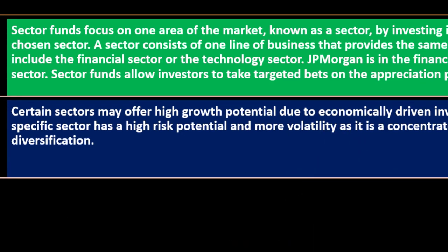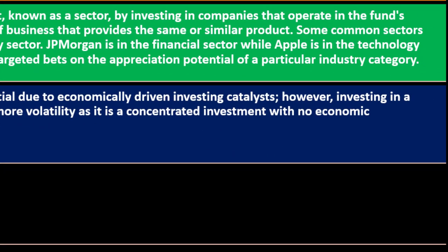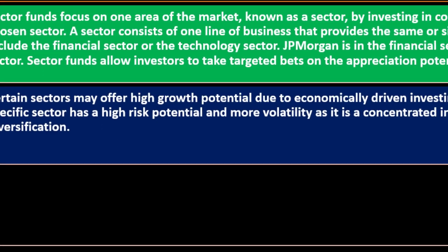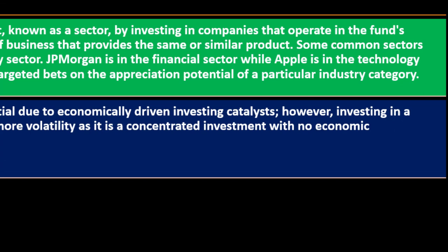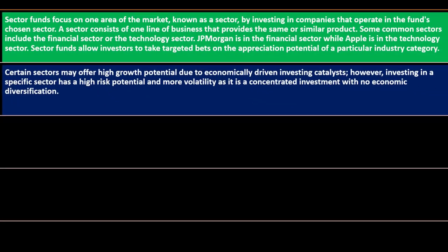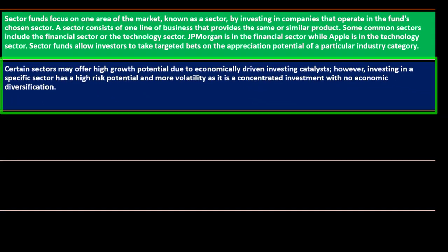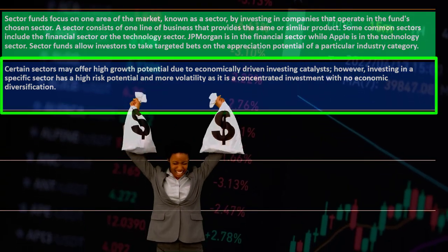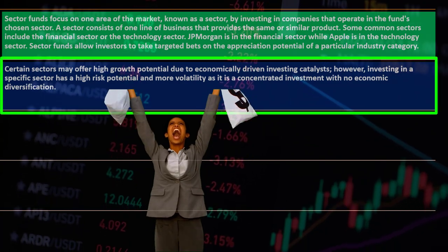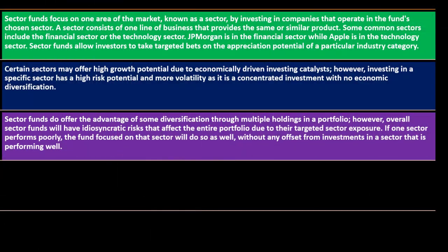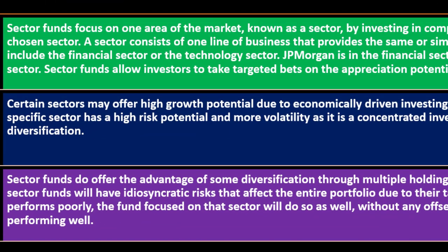Certain sectors may offer higher growth potential due to economically driven investing catalysts. However, investing in a specific sector has high risk potential and more volatility as it is a concentrated investment with no economic diversification. You have diversification within a sector, but if economic conditions are bad for the entire sector, although your money isn't in one stock, it's spread across stocks impacted by the same forces — resulting in more volatility than a broadly invested portfolio.